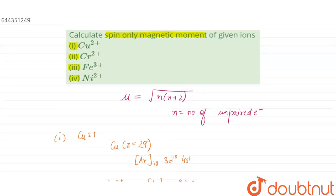The magnetic moments are: copper 2 plus has 1.732 BM, chromium has 4.89 BM, iron has 5.91 BM, whereas nickel has 2.82 BM. Thank you.